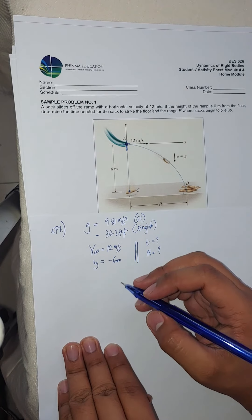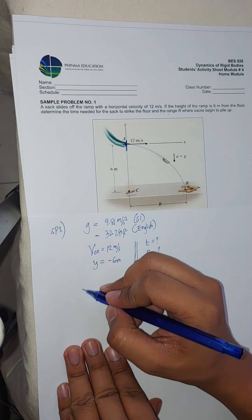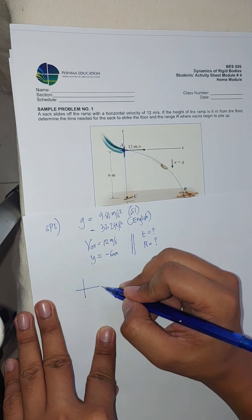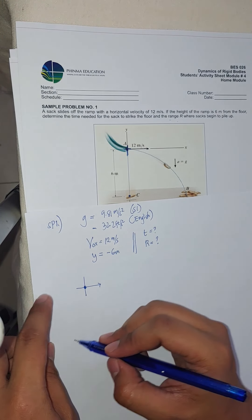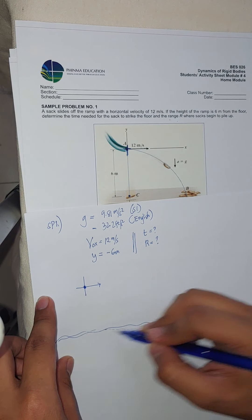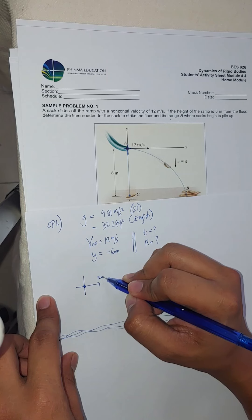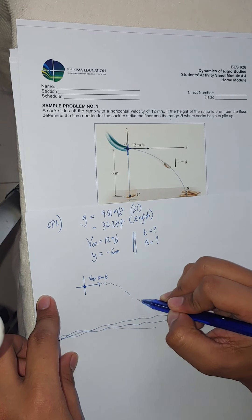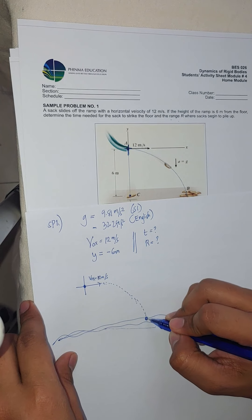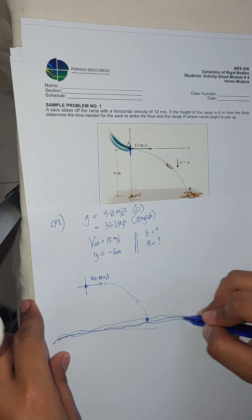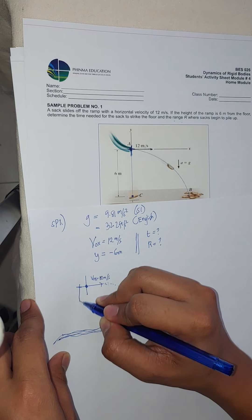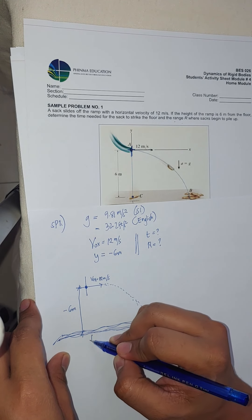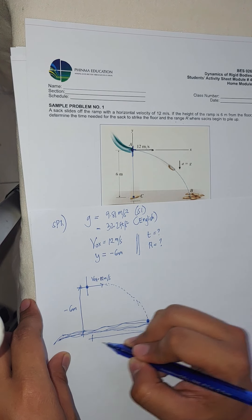If we draw this from the origin, we have the origin at the launch point and the ground below it. The initial velocity is 12 meters per second along X. The sack moves in projectile motion until it lands. From the origin down to the floor is 6 meters, or negative 6 meters, and from the origin to the total horizontal distance traveled is R — the range.